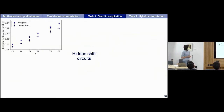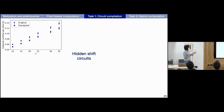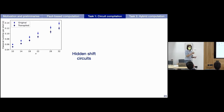The first circuits we used are hidden shift circuits — these are convenient because they're deterministic, so we know the correct outcome and can verify everything works. Here you see the classical runtime per shot: the time for all classical processing associated with this procedure. While compiling you're also simulating the main qubit — deciding the first measurement is zero, the next is one — so the two processes are completely interleaved. This gives compilation times on the order of hundreds of milliseconds.